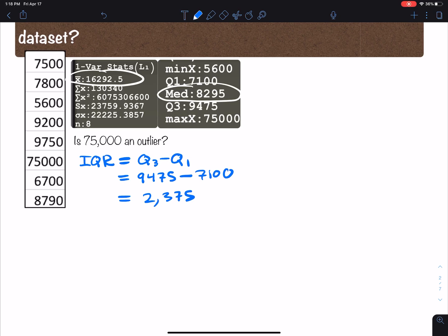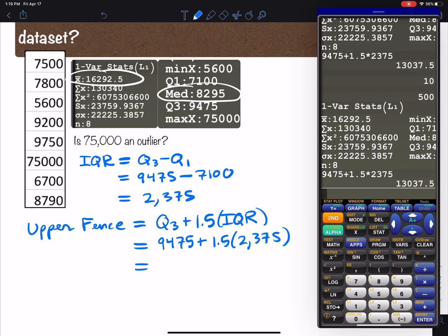Now with that we're going to find the upper fence and we're going to see if 75,000 is bigger than the upper fence. If it is, then 75,000 is an outlier. So let's see, the upper fence, what is it? It's Q3 plus 1.5 times the interquartile range, and that equals to 9475 plus 1.5 times 2375.